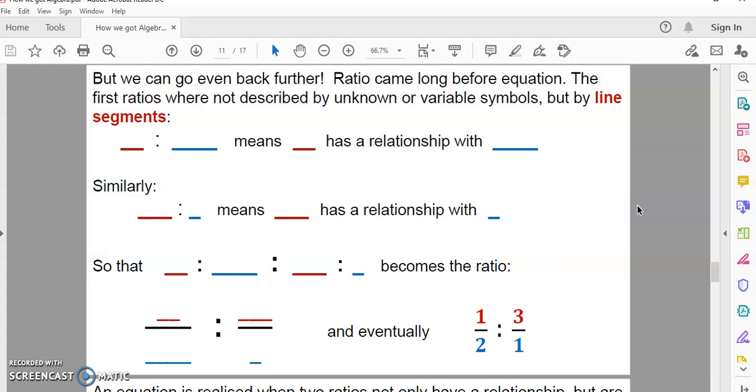The first ratios were not described by unknown or variable symbols, but by line segments, as you see here. For example, the ratio of this red line to this blue line means that the red line has a relationship with the blue line. And similarly, in this case here, if we have a longer red line to a shorter red line, and as you can see, if we write this ratio, it becomes this ratio over here. Because since this line and this line have a measure, we could write it as 1 half, and since this line and this line has a measure, we could write it as 3 1. So, this here is a ratio of numbers. And it can be written with a horizontal line or a slanting line once you have numbers.